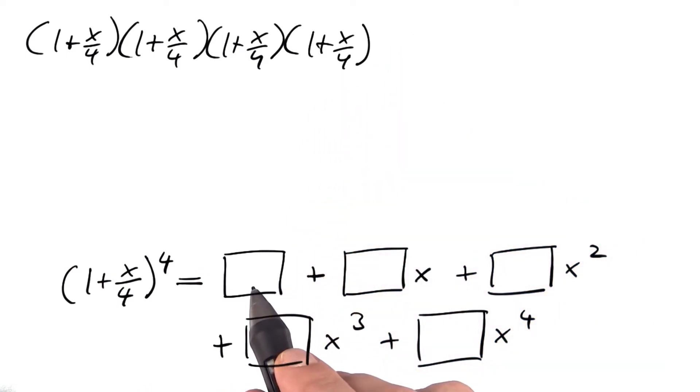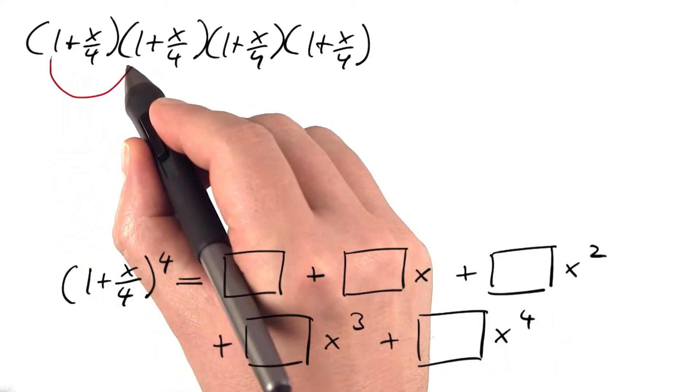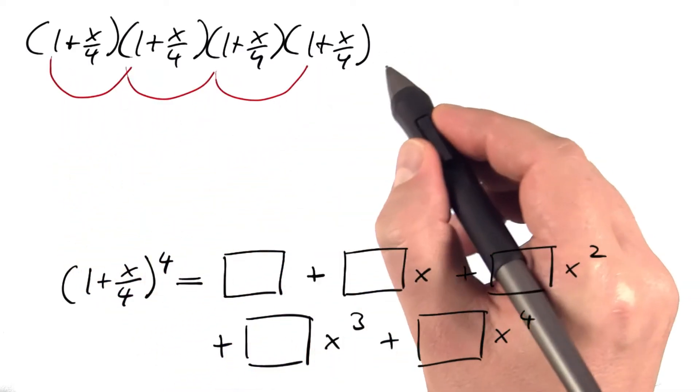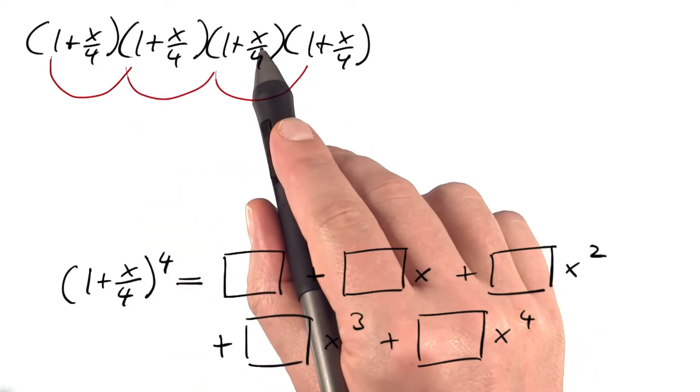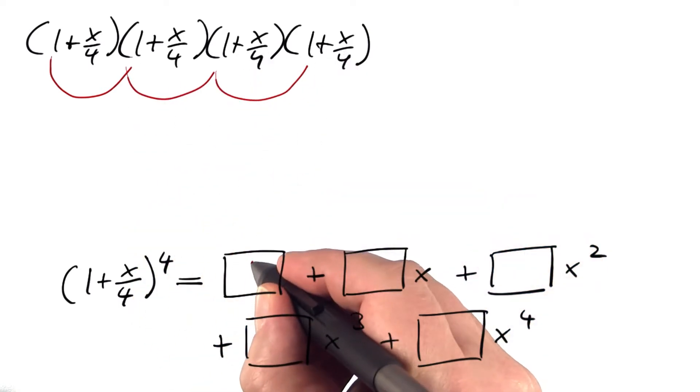For the first box, we need everything that has no x whatsoever. This is just 1 × 1 × 1 × 1. Anything else would have an x in it. So this becomes 1.